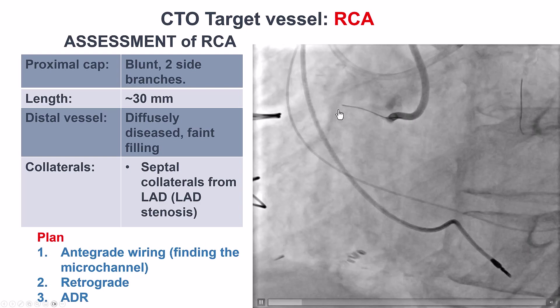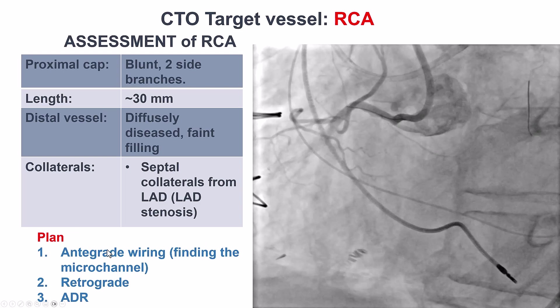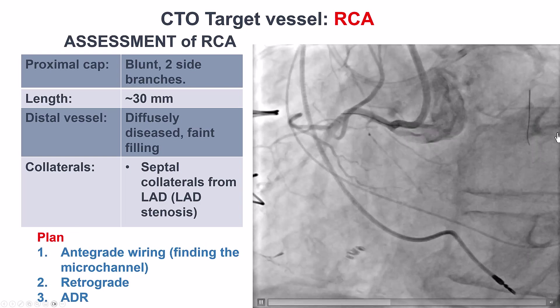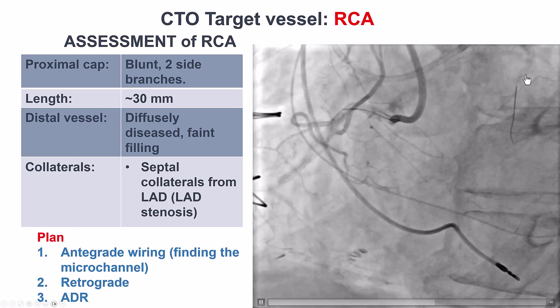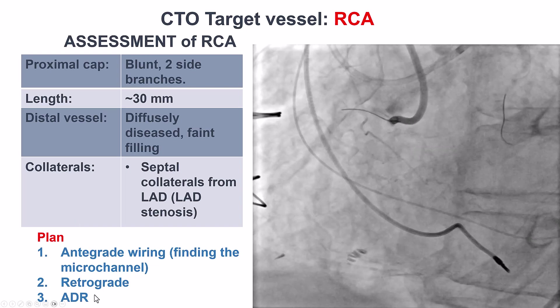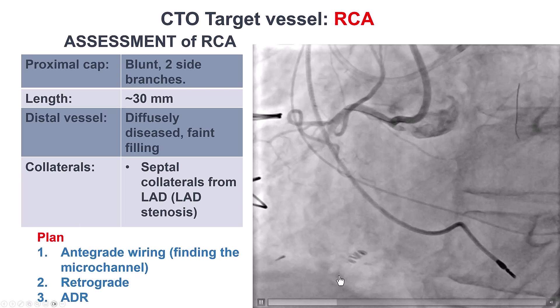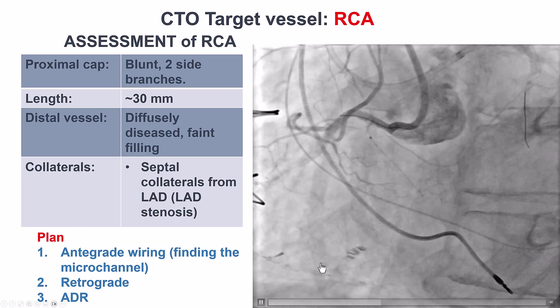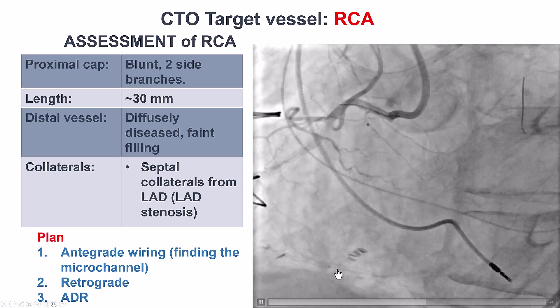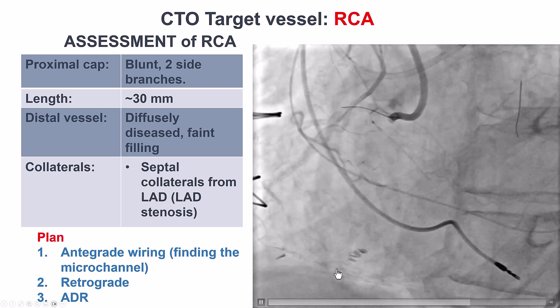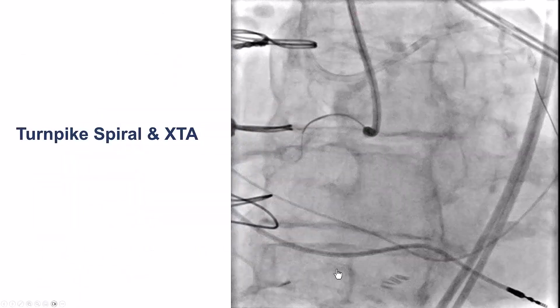Our plan was to try antegrade wiring first, then go retrograde through septals, and if that failed, use ADR — which was the least preferred approach because of significant disease in the distal RCA.